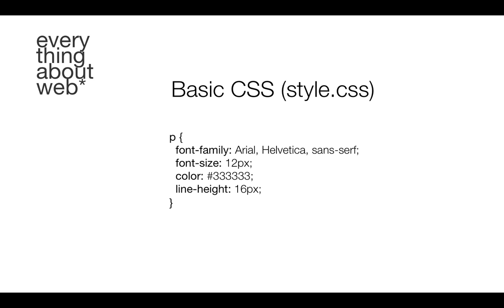In this case we have font-family with a value, font-size, color, and line-height. Basically what is happening here is we're defining these properties for our paragraphs. So every paragraph in our website would be displayed in Arial — if the computer system has Arial. If it didn't have Arial, it would display in Helvetica. If it didn't have Arial or Helvetica, it would display in some sans-serif font. We've defined our font-size as 12 pixels, displayed with hexadecimal 333333 which is a sort of dark gray, and a line-height of 16 pixels.